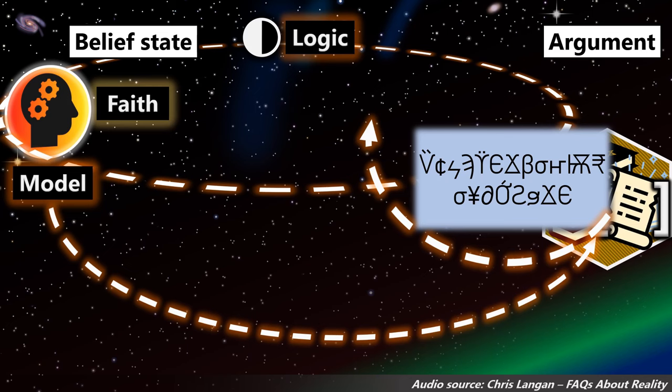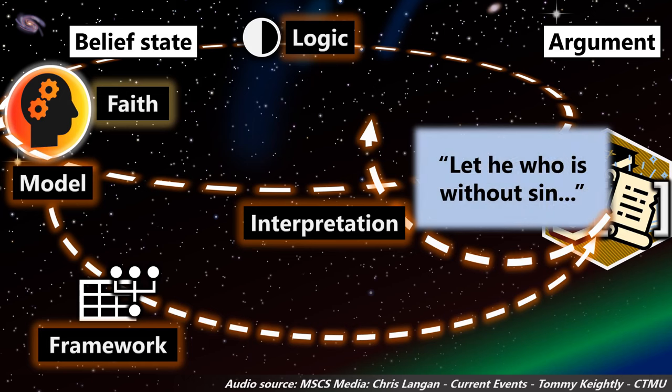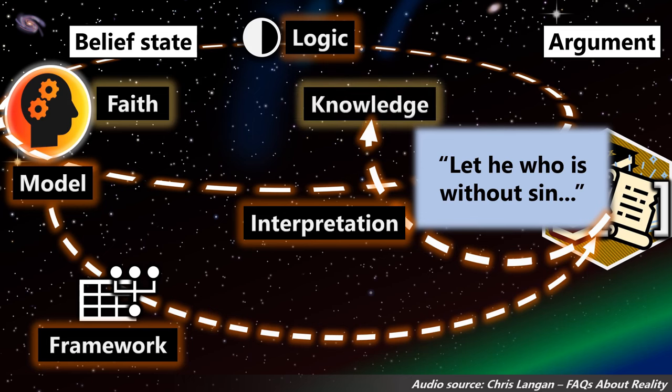When we think we're interpreting something literally, we're really just overlooking the interpretative elements that we're applying automatically, like learned associations and connotations that enable us to make sense of it. You've got to interpret the symbols. What is that symbol? What is that symbol? When you combine them like that, what do they form? They form a word. What does that word mean? What do the two words mean when you put them together? This is all interpretation.